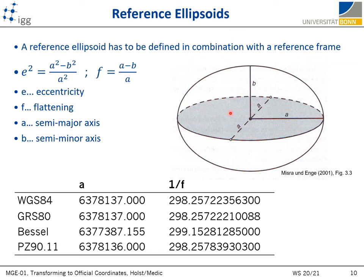In the case of the Earth's approximation, we are talking about an ellipsoid of revolution or spheroid. It is uniquely defined with just two parameters: the length of the semi-major and semi-minor axes. These parameters can be used to recalculate auxiliary parameters such as flattening and eccentricity.